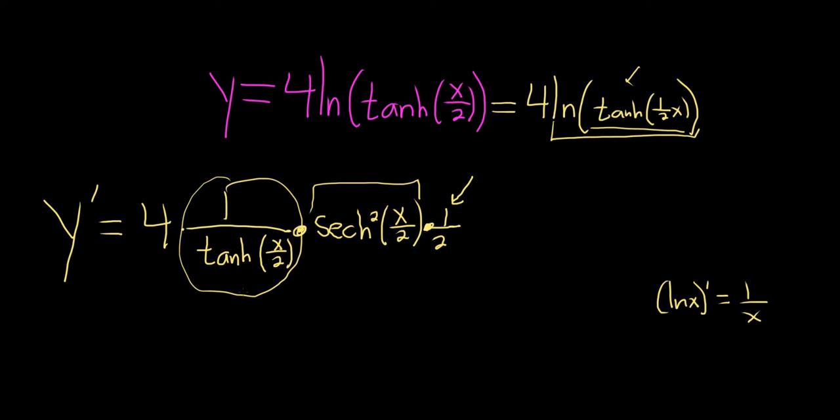I guess we can just multiply the 2 and the 4 and call it a day. However, we could probably rewrite this in a nicer way if we wanted to. For now, let's go ahead and multiply the 4 and the 1 half. So y prime, 4 times 1 half is 2, and we're left with the hyperbolic secant squared of x over 2 over tanh of x over 2.